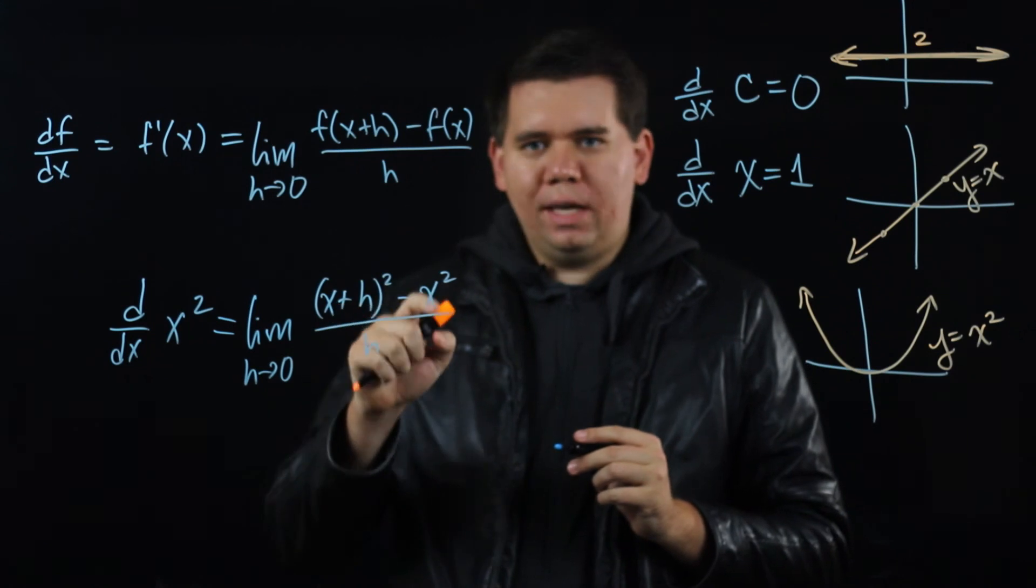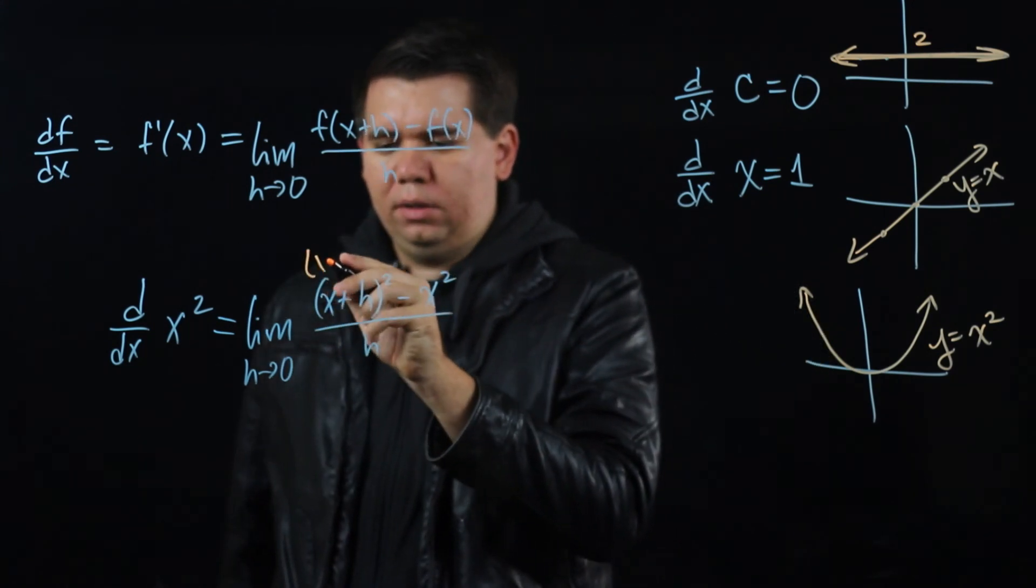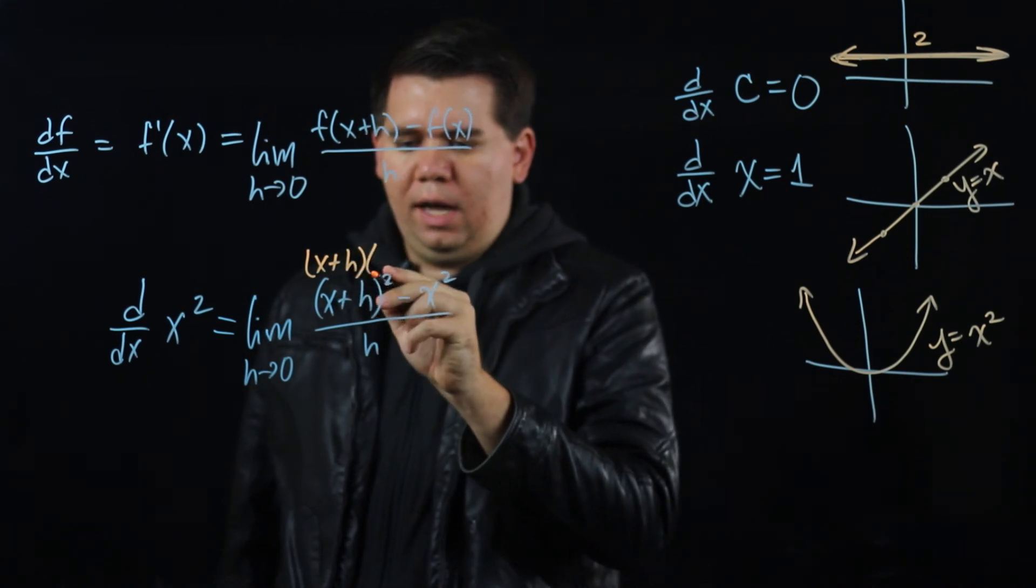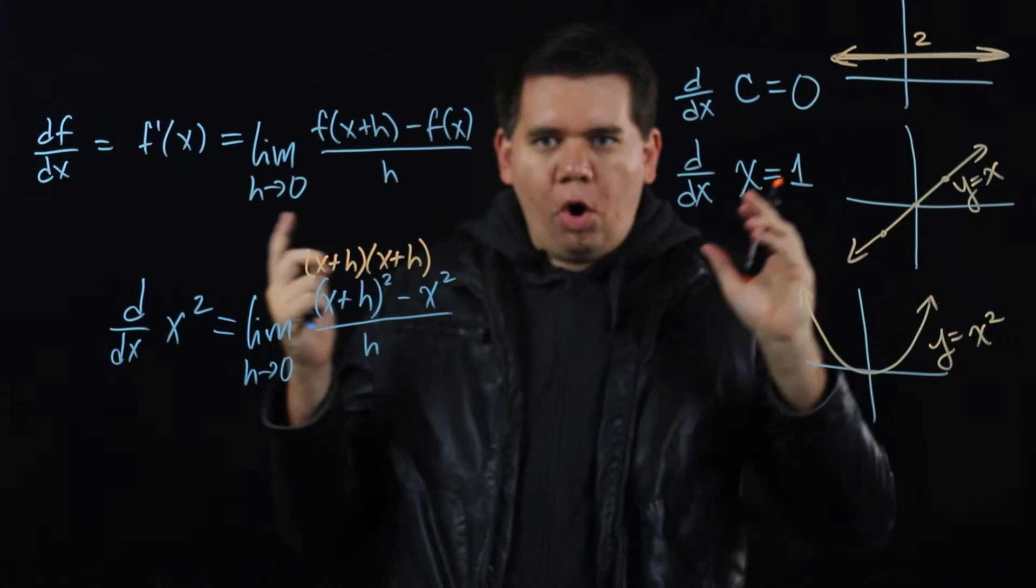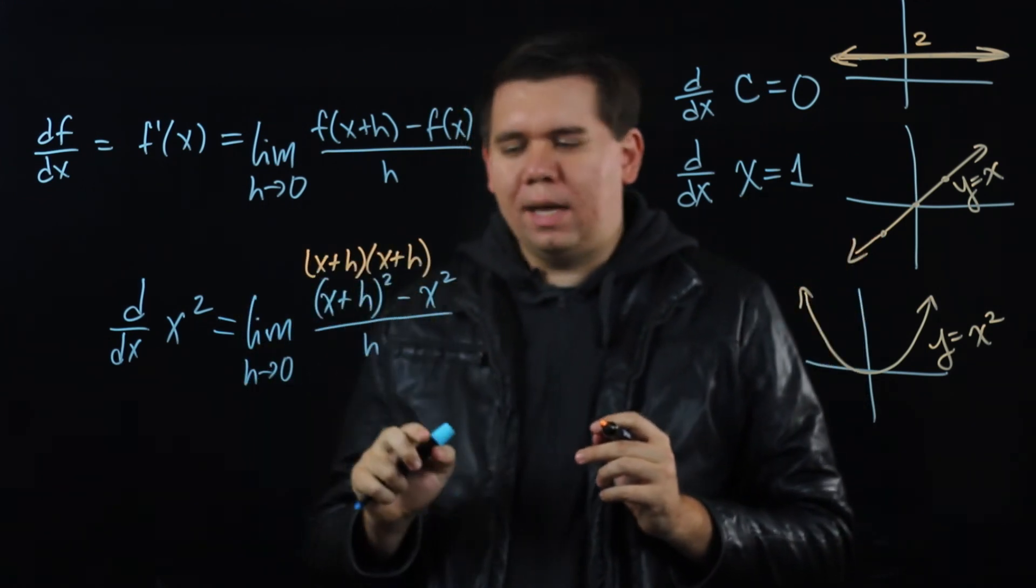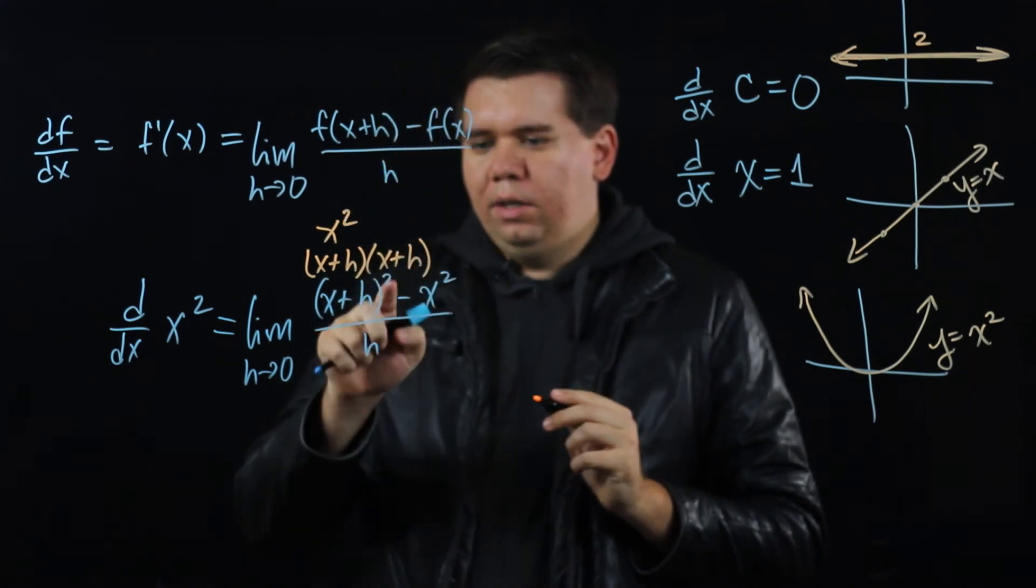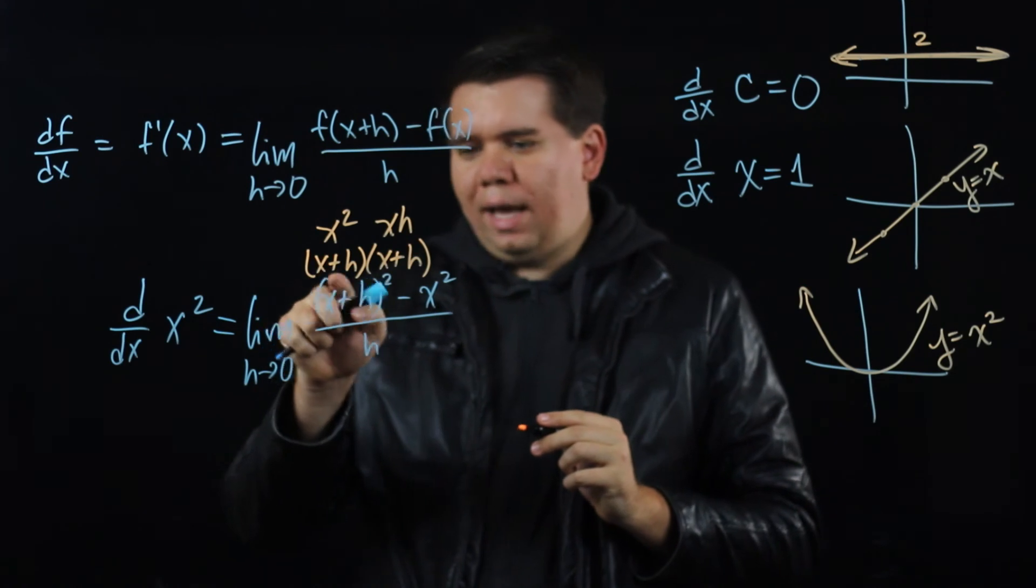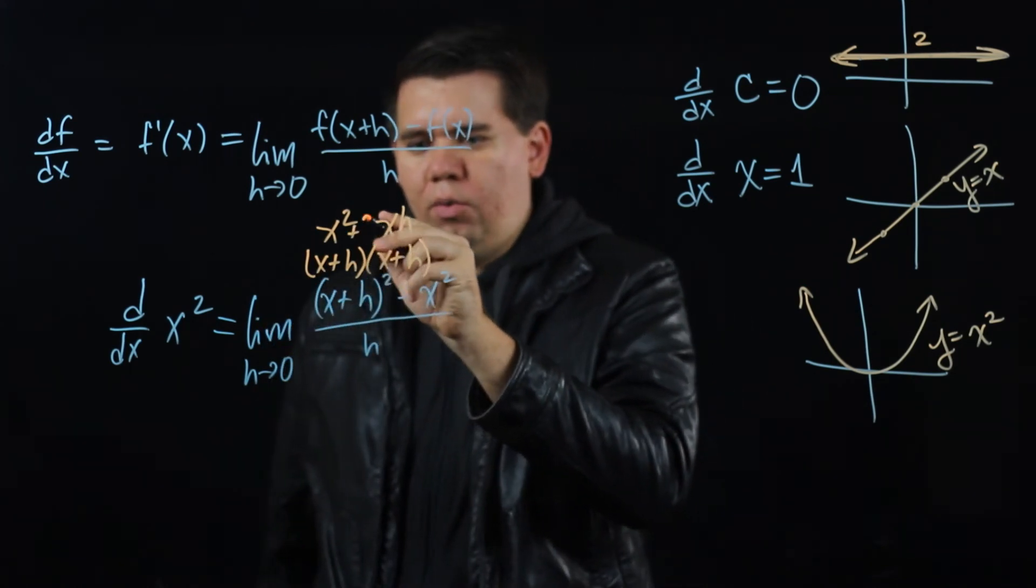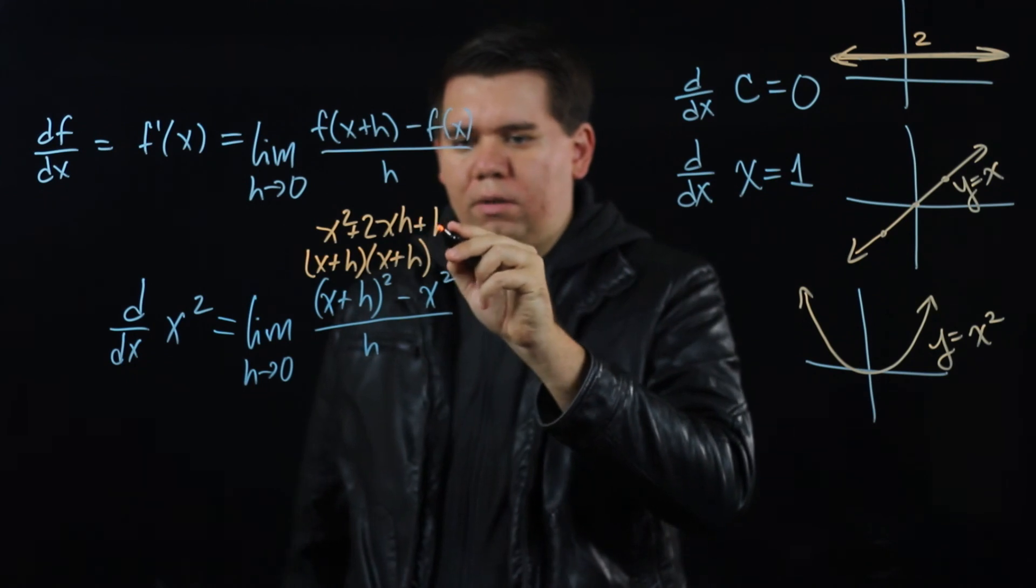What is (x+h)²? Well, that's just x plus h times x plus h. And that product is all the ways of multiplying pieces from the first with pieces from the second. You could do x with x to get x². You could do x with h to get xh. Or you can do this x with that h. So there are two ways to get x times h. And you have h times h for h².